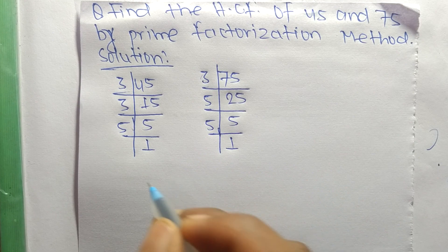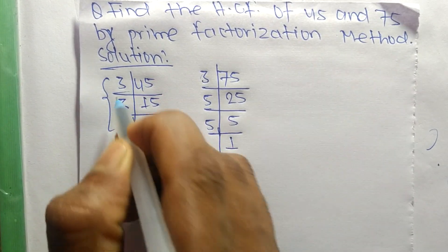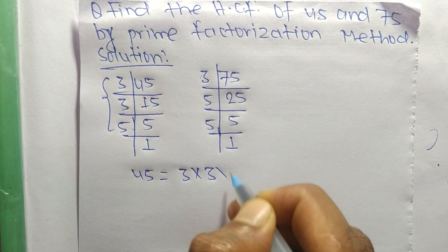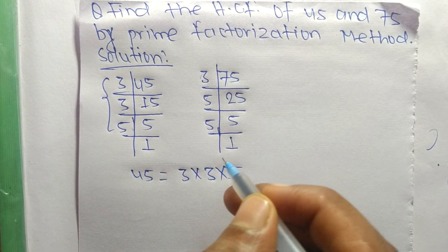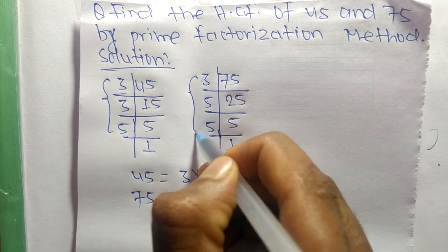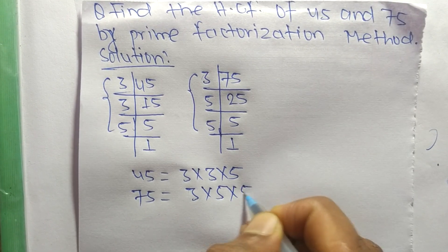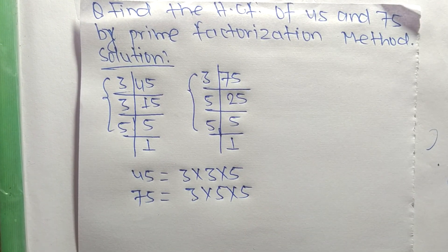We can write 45 is equal to 3 times 3 times 5. Likewise, 75 is equal to 3 times 5 times 5. So now we find out the common factors.